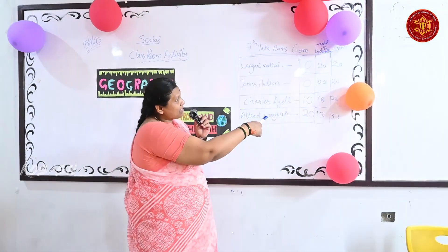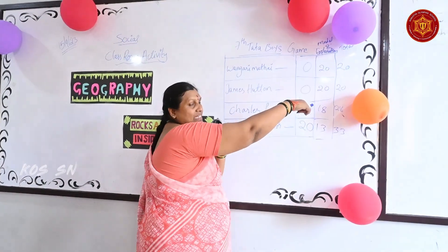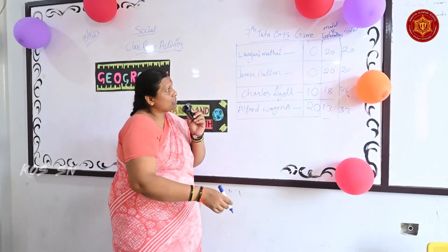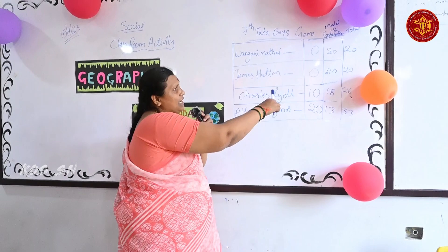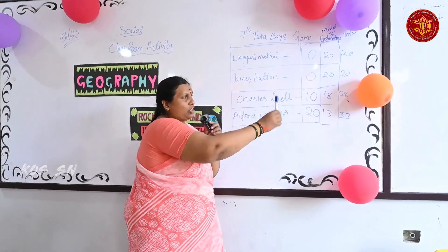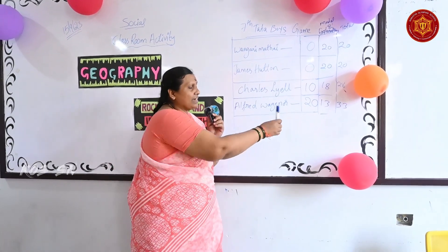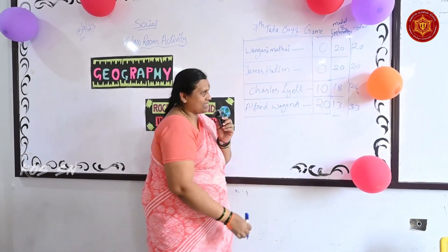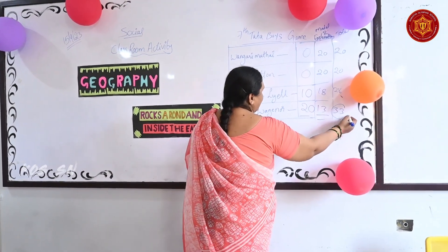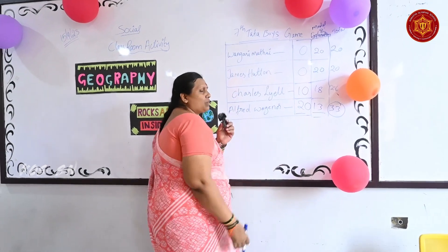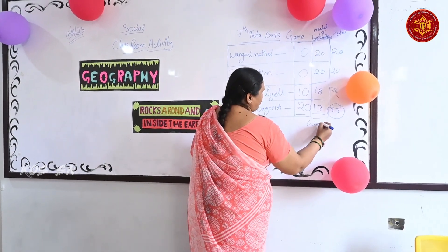Winners are declared on the basis of game round, model, and explanation. Wangarimatha team scored 20 points, James Hutton team scored 20 points, Charles Liel scored 28 points, and Alfred Wagner scored 30 points. They played the game well and their model and description were also very good, so they scored 30 points. The winners are the Alfred Wagner team.